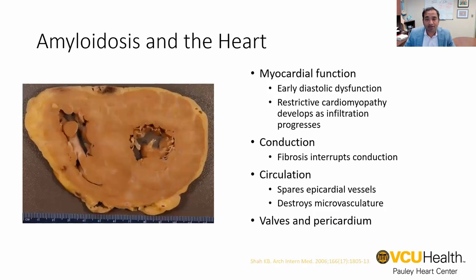Going back to amyloid and when it affects the heart, understanding how it affects the heart explains some of the clinical manifestations you'll see in clinic that should raise concern to evaluate a patient for this diagnosis. Because the heart muscle is infiltrated with non-contractile tissue, it leads to a thickening and stiffening of the heart muscle. Patients start developing symptoms of heart failure and are often misdiagnosed as having HFpEF, hypertensive heart disease, diabetic heart disease, or hypertrophic cardiomyopathy. Early on, they have some diastolic dysfunction, and later the heart becomes so stiff with small chamber sizes and enlarged atria that they develop a restrictive cardiomyopathy.